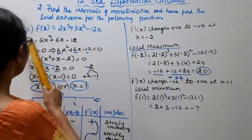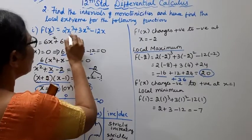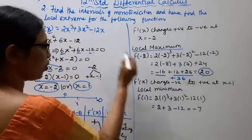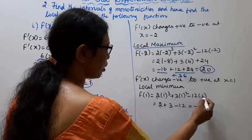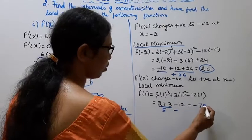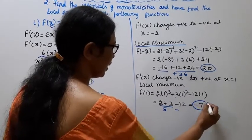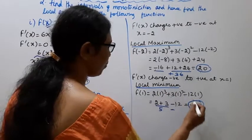f of 1, x is 1. 2 x 1 cube plus 3 x 1 square minus 12 x 1. 2 x 1 cube is 2, 3 x 1 square is 3, minus 12 x 1 is 12. 3 plus 2 is 5, 5 minus 12 equal to minus 7. Local minimum minus 7.